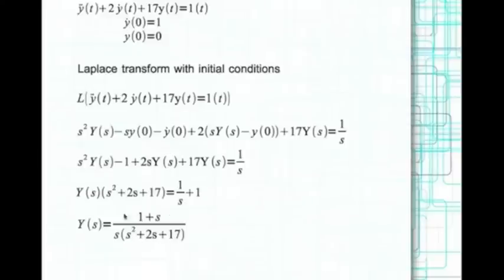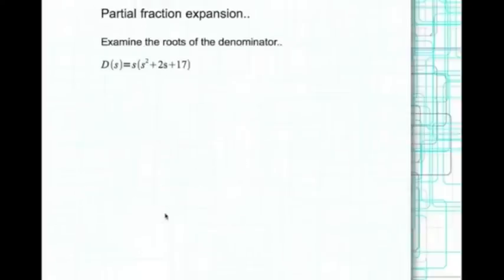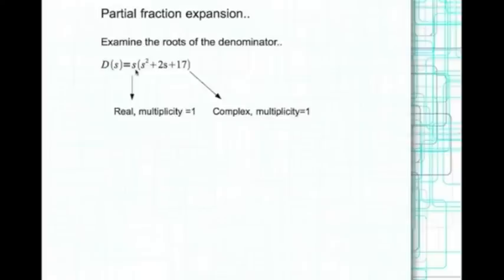Now we cannot look this up on a Laplace table and invert it directly, so we use partial fraction expansion. The first step is to examine the roots of the denominator, which is given by s times (s² + 2s + 17). Here, s is a real root with multiplicity 1, and s² + 2s + 17 is a complex root with multiplicity 1.